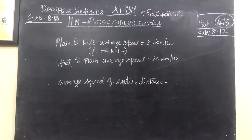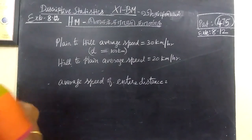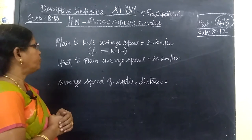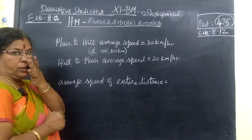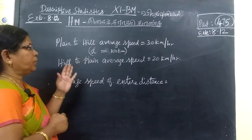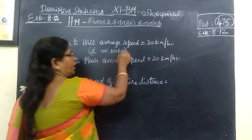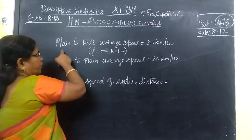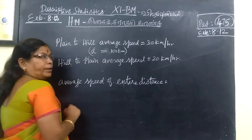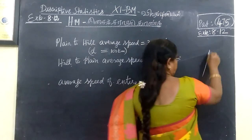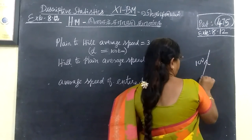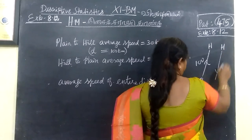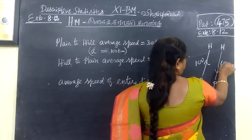The problem is given: an automobile driver travels from plane to hill. The average speed is 30 km per hour. The distance from plane to hill is 100 km. So 100 km he is traveling from plane to hill. The distance from hill to plane is 100 km distance.